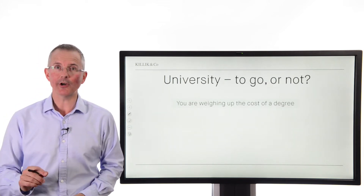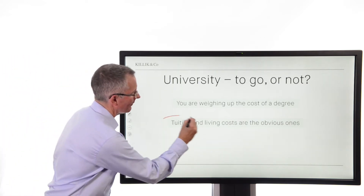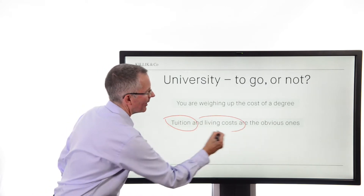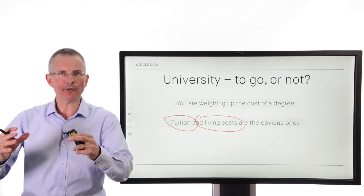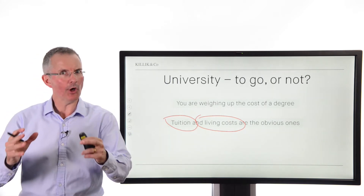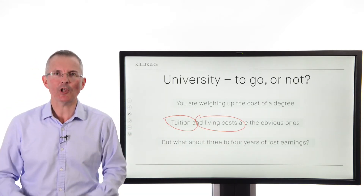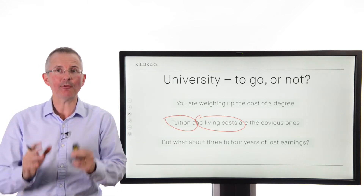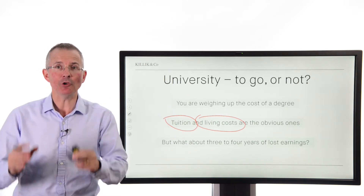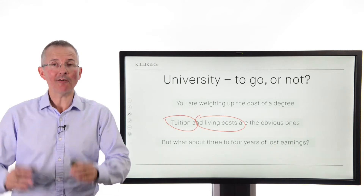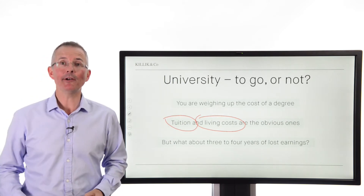Make sure you're weighing up the full cost of the degree against not doing a degree. A lot of people identify the cash costs — tuition fees and living costs, where student loans only cover a certain proportion. But what about the time you're investing over three to four years? Could that time be spent doing an apprenticeship, being employed? And if so, how much money have you not earned? And don't forget, if that money would have gone into your retirement funds, you've also missed out on the opportunity to compound it over that period.